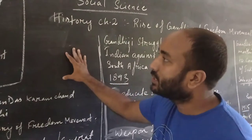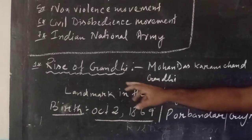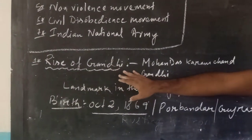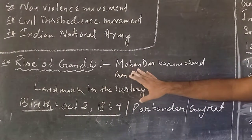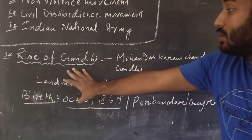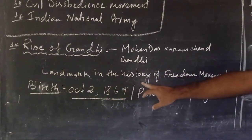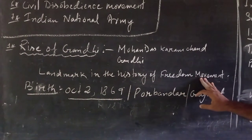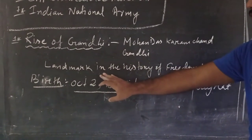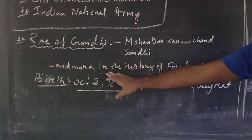First we will discuss the first key point, that is Rise of Gandhi. We will discuss about Mahatma Gandhi, his life and his biography. Mahatma Gandhi's full name was Mohandas Karamchand Gandhi. He was called a landmark in the history of freedom struggle. He was the main figure in the freedom struggle of India, and he is also called the Father of the Nation.